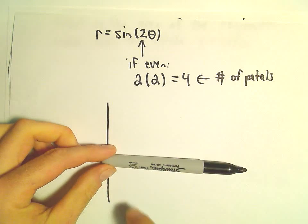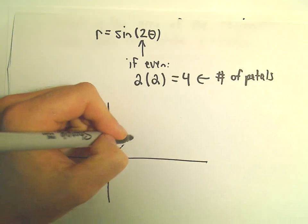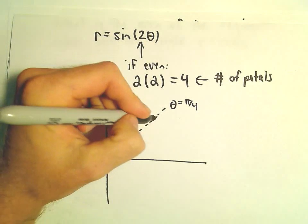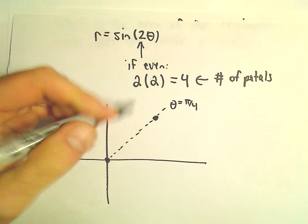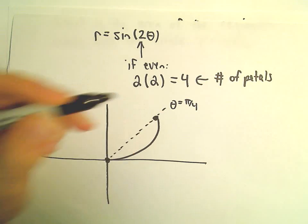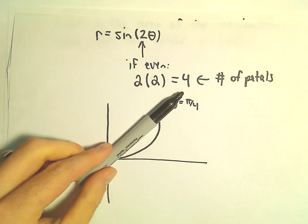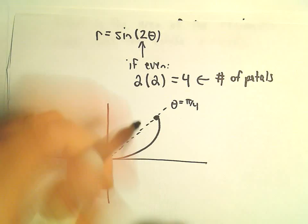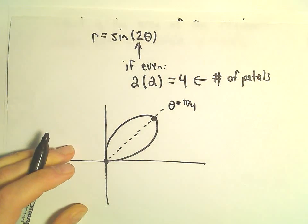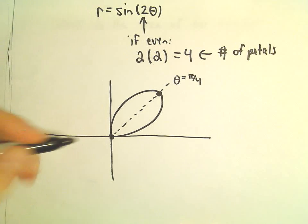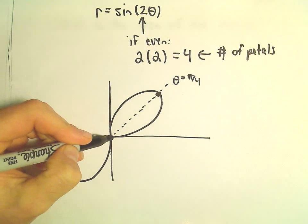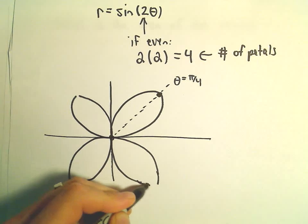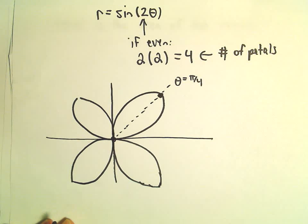Notice that if theta equals 0, we'll get sine of 0 which is 0. At theta equals pi over 4, we get sine of 2 times pi over 4, which is sine of pi over 2, giving our r value of 1 — the maximum distance from the origin. As theta increases from 0 to pi over 4, r increases, then decreases back to 0 from pi over 4 to pi over 2, giving one petal. By symmetry, we get a petal in each quadrant. So there's a rough sketch of r equals sine 2 theta.